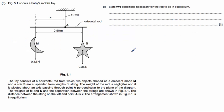Part C introduces us to a baby's mobile toy consisting of a horizontal rod with two objects hanging from it. We can assume that the weight of the rod is negligible and we know the weights of the two objects hanging from it. Essentially this is a moment problem. For part I, state two conditions necessary for the rod to be in equilibrium.